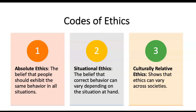The second type is situational ethics, which is the belief that correct behavior can vary depending on the situation at hand. For instance, we may believe we should never lie, but when placed in a really difficult situation, we do tend to lie. Even if I asked who has not lied in the past year, you'd probably lie if you raised your hand. There are things we call white lies — things we say just to please another person in a specific situation.